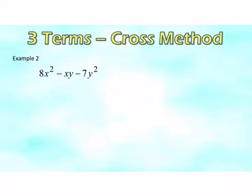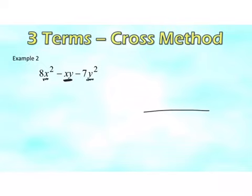Factorization for three terms using the cross method. In this next example, there is more than one unknown — both X and Y appear. We identify the 'pure breed' terms: just the x-squared term and just the y-squared term, while the x-y term is a mixture. First step: check for common factors. There are none here, so we proceed directly with the cross method.